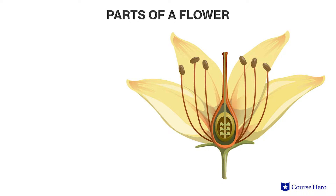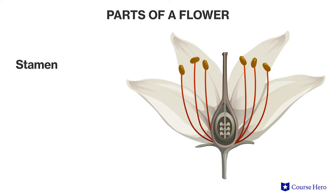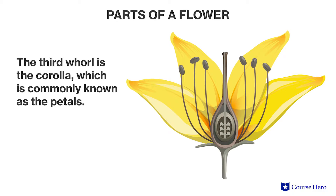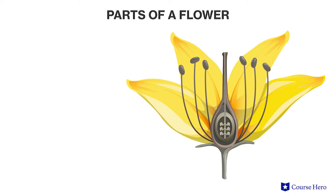Flowers are constructed in whorls. The innermost whorl is the pistil, the female organ of a flower. The next whorl contains the stamen, which is the male pollen-producing reproductive organ. The third whorl is the corolla, which are the petals. And finally, the outermost whorl consists of the calyx, which are the sepals.